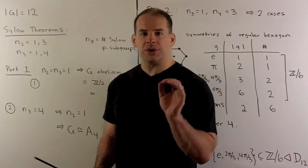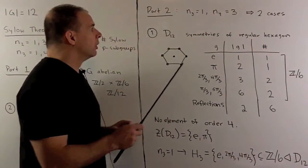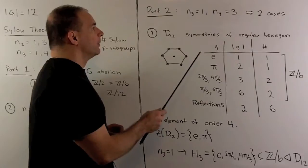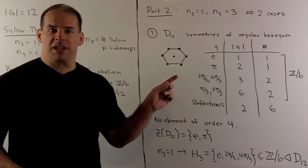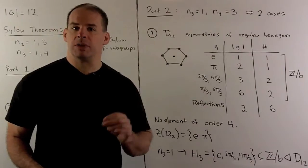For part 2, we consider the remaining case, where n sub 3 equals 1 and n sub 2 equals 3. When we have this condition, we'll have two isomorphism types.